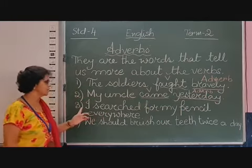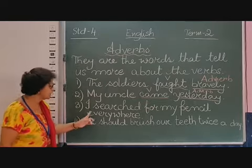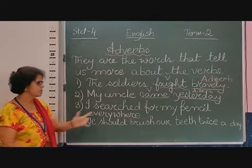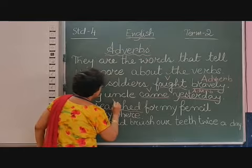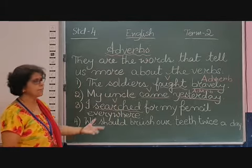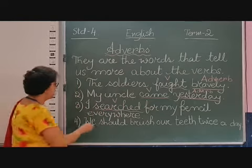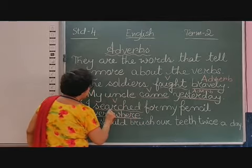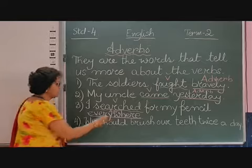The third sentence: I searched for my pencil everywhere. Which is the verb here? Search. 'I' is a pronoun, 'search' is the verb. Search where? Everywhere. 'Pencil' is a noun. I search for my pencil where? Everywhere. So 'everywhere' is an adverb.